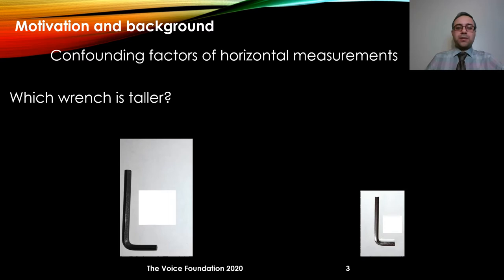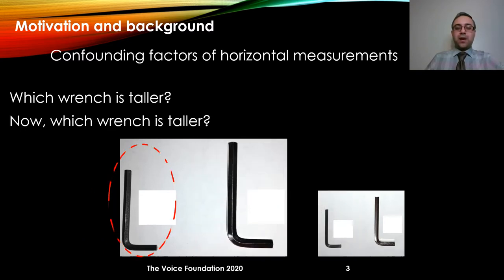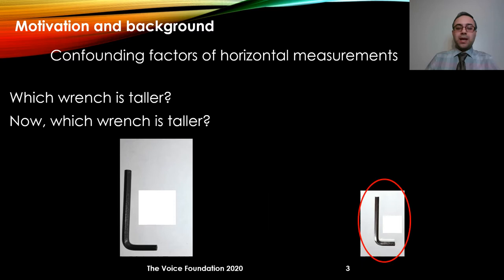So here is a simple experiment. We are provided with two images and tasked to determine which object is taller. By looking at the images, we would say that this one is taller. However, if we are told that this is the same setting but the images were taken at two different working distances, then we would change our answer to the other one.